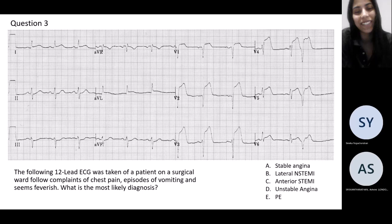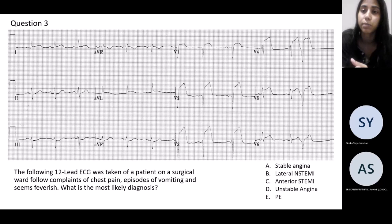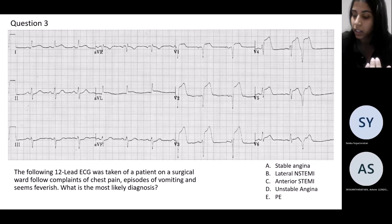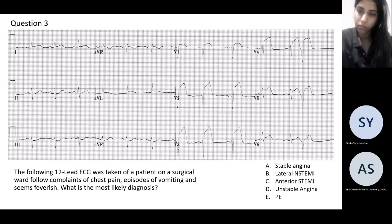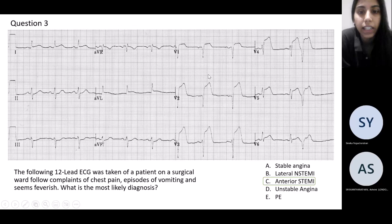Next question: the following ECG is taken on a patient admitted onto a surgical ward complaining of chest pain, some vomiting, and spiking temperatures. What is the most likely diagnosis? Well done if you got anterior STEMI. You can see quite noticeable ST elevation in the anterior leads.